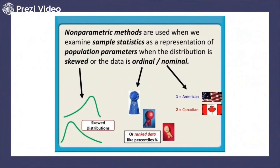In non-parametric tests, you are dealing with sample statistics that represent a population parameter where the distribution is skewed — meaning it does not follow a normal or binomial distribution as in parametric tests. In the parametric test, you have a normal distribution curve, but in the non-parametric test, the data is skewed or ordinal.